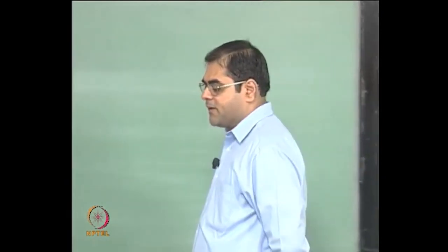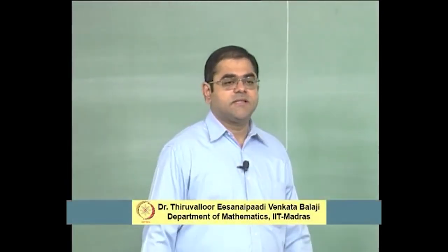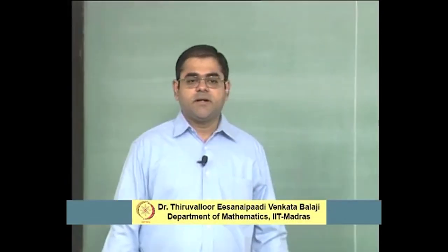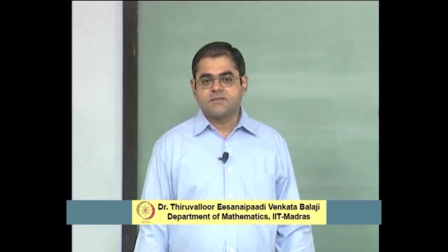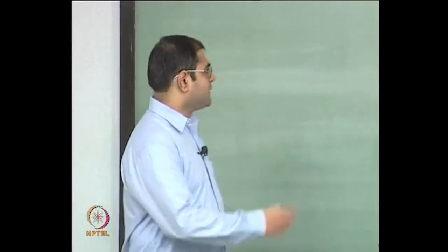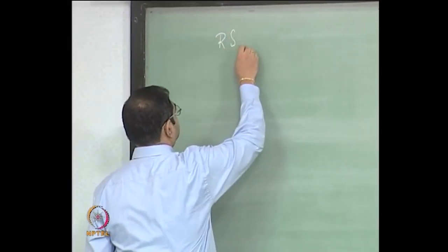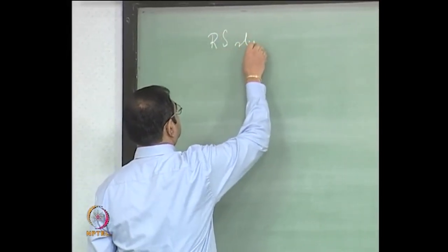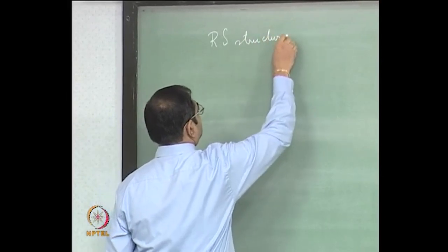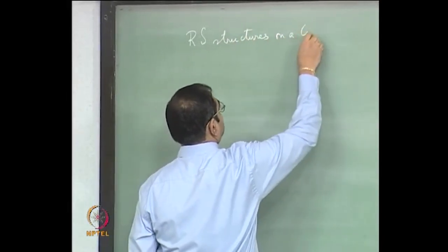Welcome to lecture 4 in the series on Riemann surfaces and algebraic curves. What we will try to do in this lecture is to put Riemann surface structures on the cylinder and the torus. So let us begin with the cylinder. Let me write that down: Riemann surface structures on a cylinder.